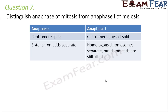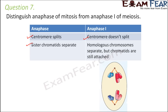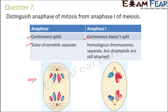Question number 7: Distinguish between anaphase of mitosis and anaphase 1 of meiosis. In anaphase of mitosis, the centromere splits because sister chromatids separate. But in anaphase 1 of meiosis, the centromere doesn't split because sister chromatids do not separate — it is the homologous chromosomes which separate. So in mitosis, one chromosome splits into two sister chromatids, whereas in meiosis 1 the two homologous chromosomes simply move apart with their centromere still intact.